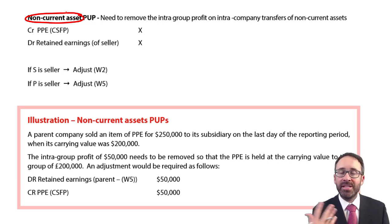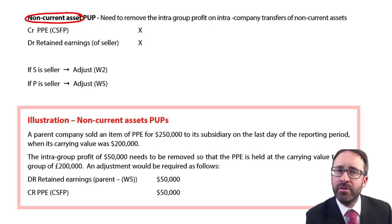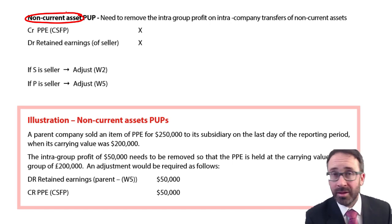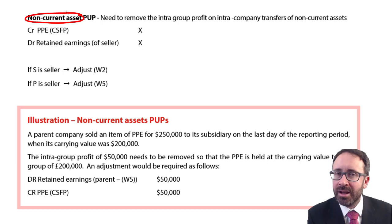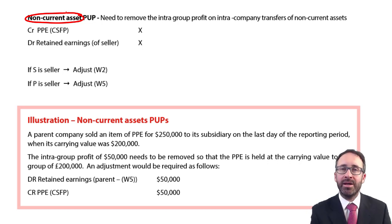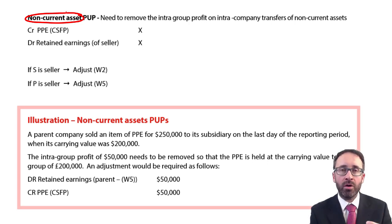We do it in a very similar way to what we did with inventory. Here's a question: what was the journal entry when we had an inventory provision for unrealized profit? What was the debit, what was the credit? Flicking back through your notes — yes, we debit the retained earnings of the seller and we credit the inventory, reducing the value of the asset and reducing the profits through retained earnings. So what's different when looking at a provision for unrealized profits for a non-current asset or property, plant and equipment?